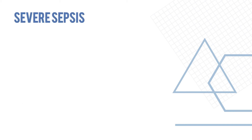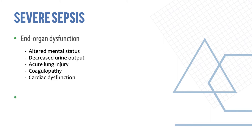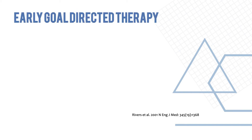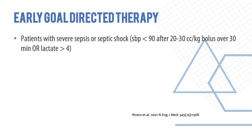In severe sepsis, end-organ dysfunction leads to altered mental status, decreased urinary output, acute lung injury, coagulopathy, and cardiac dysfunction — classically presenting with lactic acidosis. An important concept for all these patients is early goal-directed therapy. Patients with severe sepsis or septic shock — defined as systolic blood pressure less than 90 after a 20–30 mL/kg bolus over 30 minutes, or a lactate more than 4 — are candidates for this protocol.